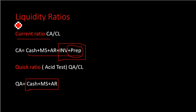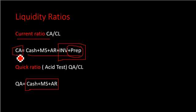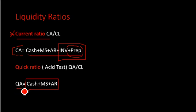Inventories, once sold, may be sold on account and become part of accounts receivable, so they are not readily convertible into cash. Prepayments are intended to be consumed, not converted into cash. If your ability to pay near-term demands is based on current assets, that's your current ratio. If it's based on quick assets, that's your quick ratio.